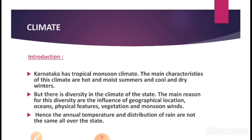For example, during summer some parts of the state have temperatures exceeding 40 degrees Celsius, while the Malnad region and its neighboring districts record lower temperatures due to the dense forest area there. In contrast, the Northern Maidan region has no such forest cover, so it experiences the highest temperatures during summer. Some parts have ocean, some have evergreen forest and huge mountains, while others are plain Maidan regions. Due to these different geographical locations, annual temperature and distribution of rainfall also vary across the state.